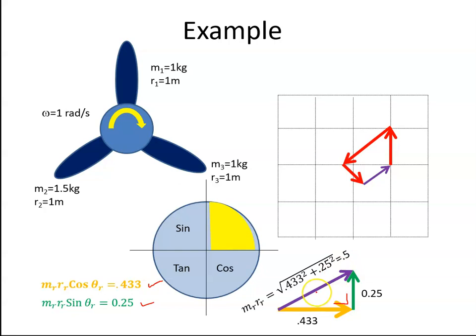And what is this angle? Well that angle is the inverse tan of 0.25 over 0.433, which is 30 degrees. So basically it's telling us, if this is our propeller, there's 30 degrees roughly, we would have to put a mass radius combination of 0.5 at this position to balance that propeller.